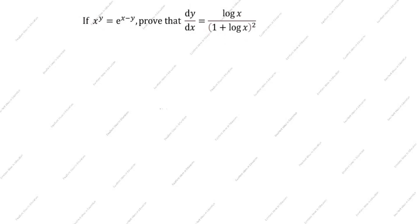Now we will differentiate this one. What is given in this question? x power y is equal to e power x minus y. So we are going to take log on both sides.